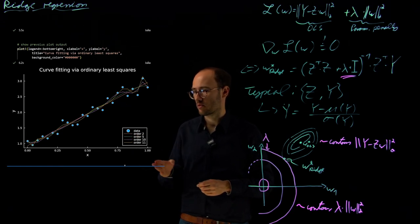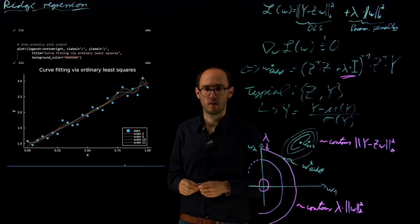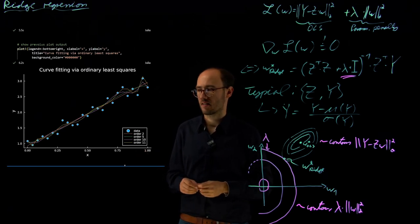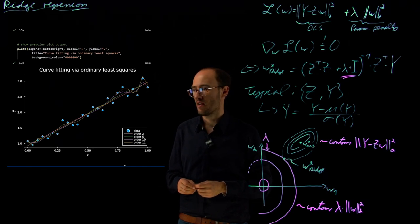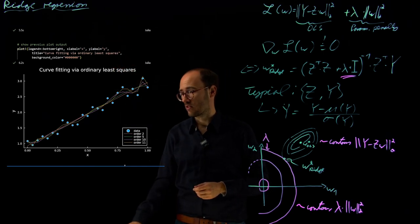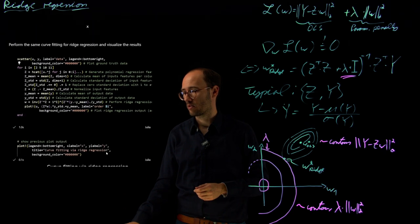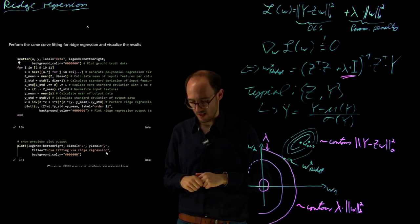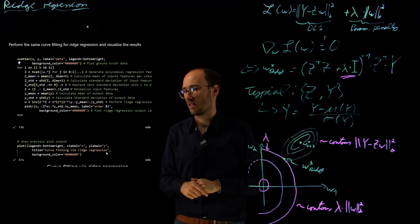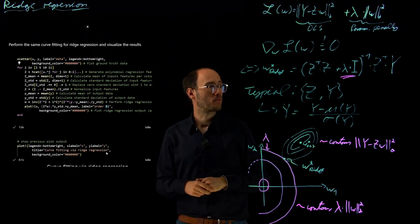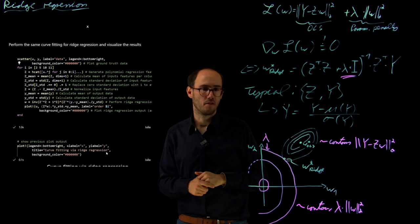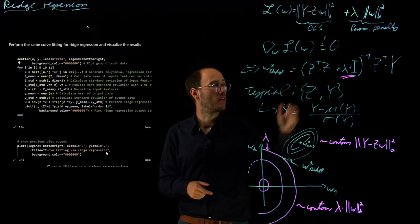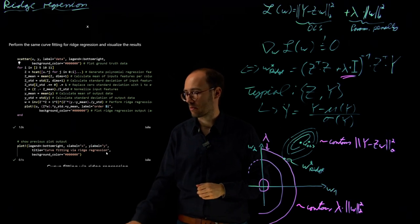So what can we do? Either we could reduce the number of polynomial order to a suitable extent—that's in the domain of model selection, a topic we'll discuss later—but what we can also do is apply ridge regression. We do the same polynomial fit here again, but we consider our ridge regression problem by adding this λ times identity matrix. Very typically, we just set lambda to one in this example. However, in practice lambda would be a hyperparameter of our regression problem that we would tune heuristically and empirically.